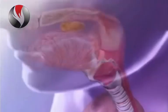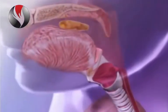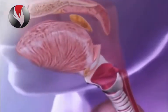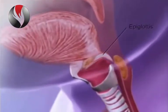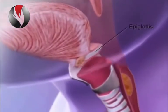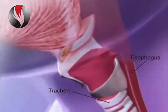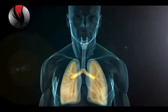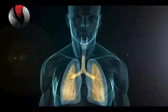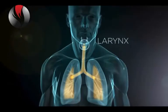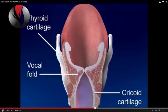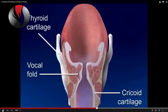The epiglottis closes over the vocal cords when we swallow. Sometimes fluid gets through and we cough to clear it out. When air passes through our vocal cords as we speak or sing, they create a series of sound waves, which we can hear. This series of sound waves we call vibration.